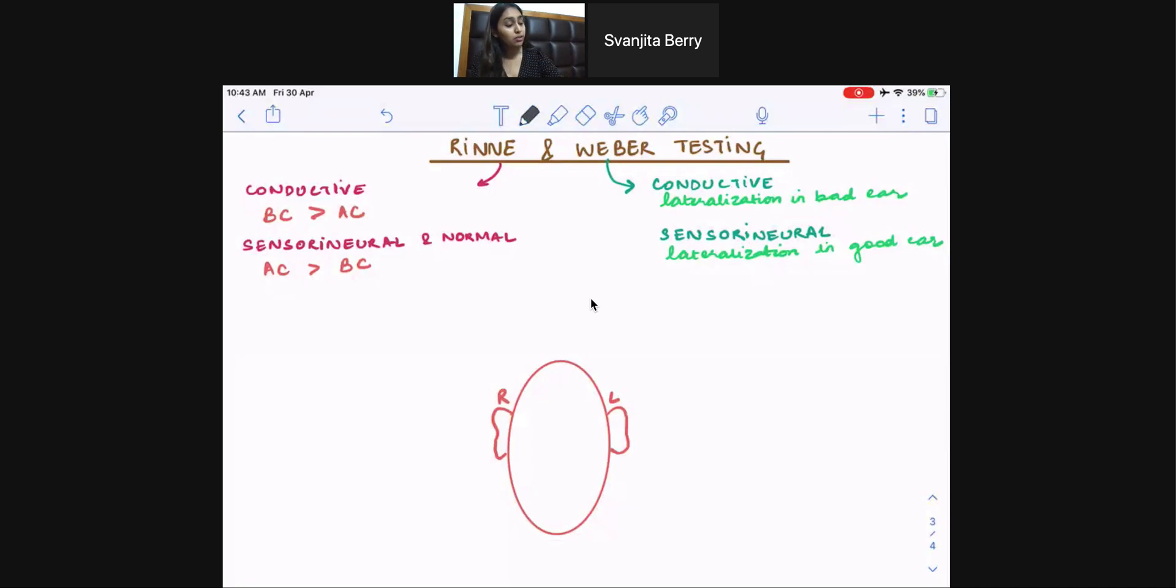Conductive hearing losses have to do with our outer and middle ear problems. Sensorineural hearing losses have to do with our inner ear problem, like the cochlea. So let's learn these tests through a series of examples, or two examples.